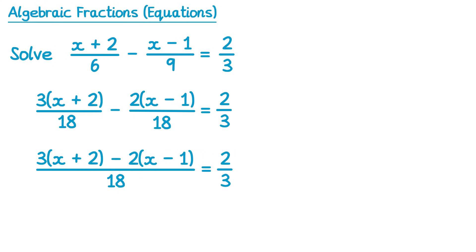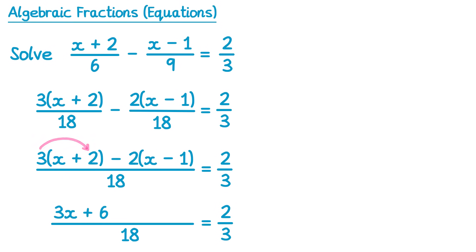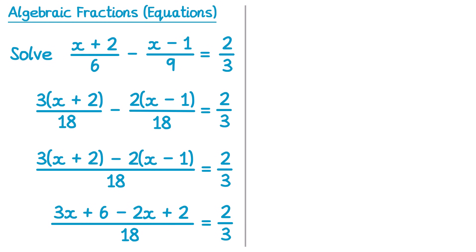Then as we did before, we're going to expand those brackets. We've got 3 lots of x, that's 3x. 3 lots of positive 2, that's plus 6. Then we have negative 2 times x, that's negative 2x. And you have to be really careful on this one — this is a really common mistake — negative 2 times negative 1 is positive 2. Then we'll collect the like terms on the numerator. We've got 3x minus 2x, that's just 1x. And then we've got 6 plus 2, which is 8.